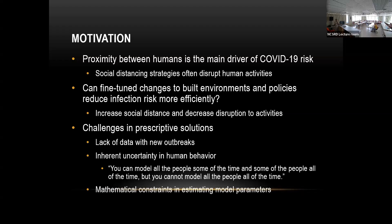Here are some challenges in prescriptive solutions. One is you often have lack of data within your outbreak — you don't have parameters for your infection spread models to predict with reasonable accuracy. There's inherent uncertainty in human behavior, and there are also mathematical constraints in estimating model parameters, even if you had the data.